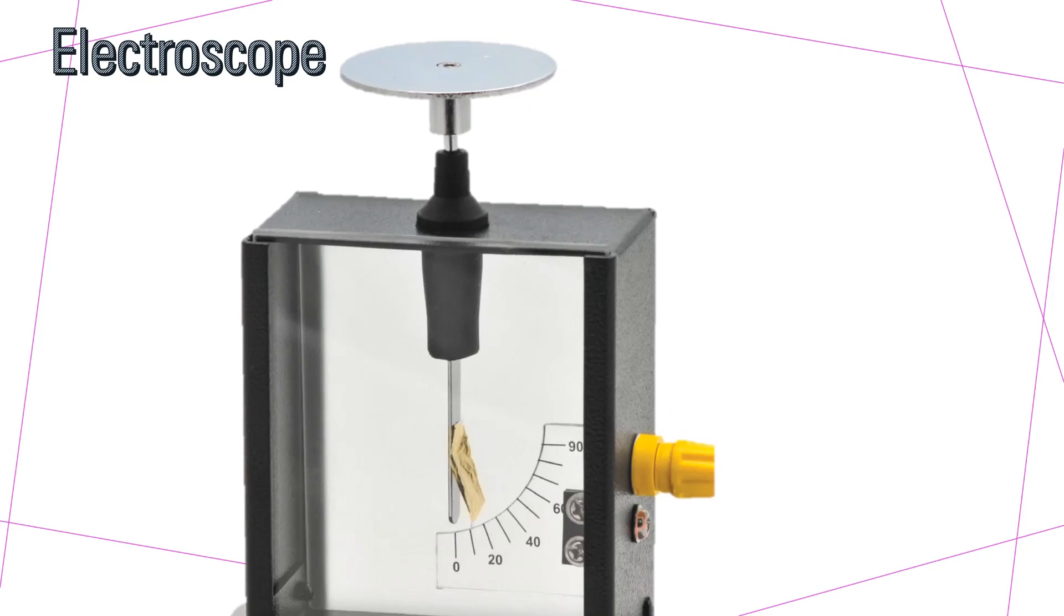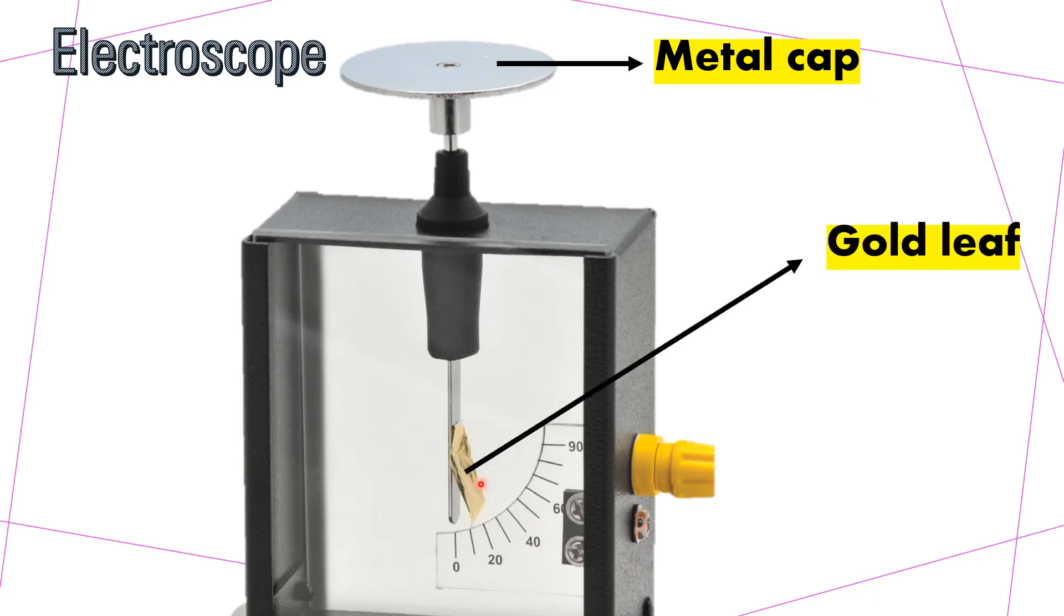Let's zoom in on the electroscope and learn its different parts. The upper part here is the metal cap, which is an electric conductor. And this part here is the gold leaf, because it looks like a leaf and is gold in color.